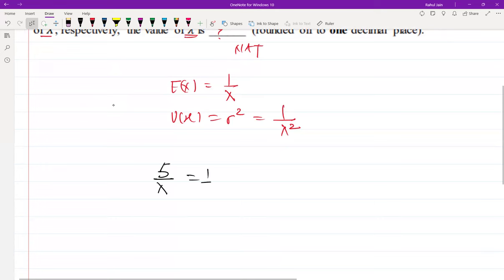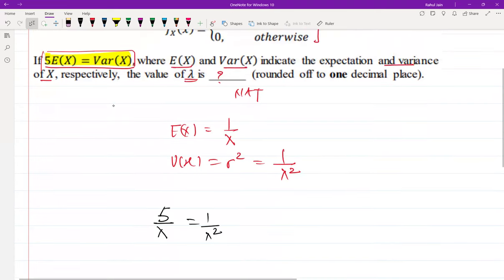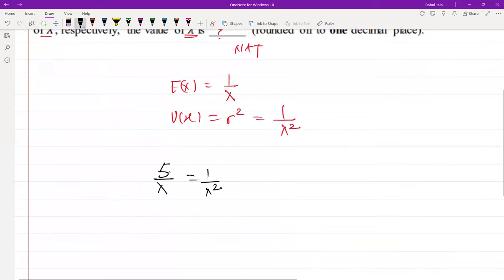Now if you solve this equation, you get 5 equal to 1 by lambda. That is lambda equal to 1 by 5, which is nothing but lambda equal to 0.2.